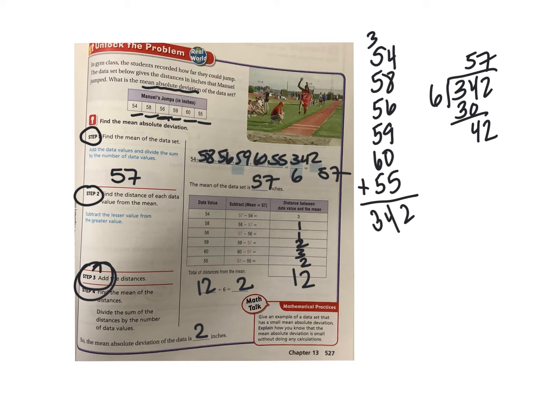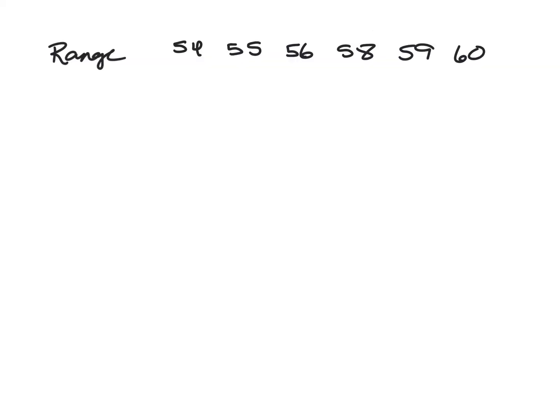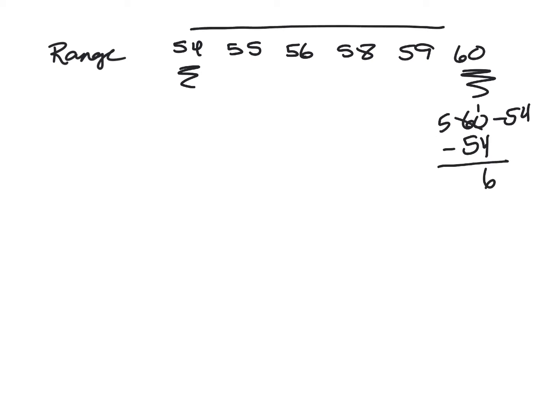Another way to get a measure of variability is to use the range. You've done range before — that's just taking the largest number and subtracting the smallest. So we take 60 minus 54, which gives us 6. The range is 6. That's another measure of variability. The range is a different measurement than our MAD, but MAD was seeing how far data is from the mean.